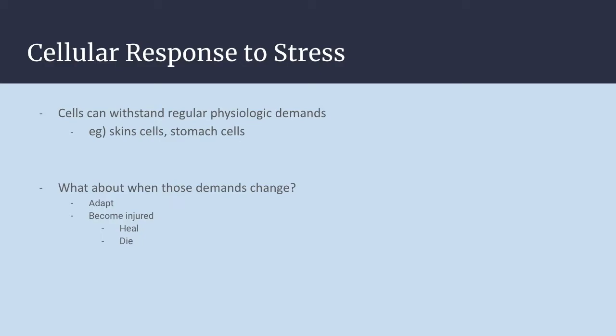But what happens if the environment or the demands on the cell change? There are two things cells can do. First, they can adapt — undergoing a change to better handle the environment or stimulus, and these changes are typically reversible in response to physiologic or pathologic stimuli. Or cells will become injured, which can occur if adaptive abilities are exceeded, if the change is too abrupt, if there's a deprivation of nutrients or oxygen, or if the cell is compromised by mutations.